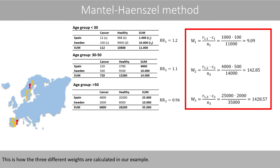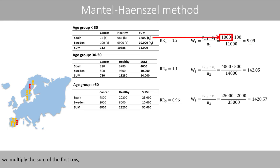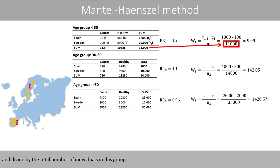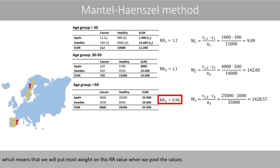This is how the three different weights are calculated in our example. To calculate the weight for the first group — the group with the youngest people — we multiply the sum of the first row by the value in element C and divide by the total number of individuals in that group. Note that the weight of the last group is much higher than the weights of the other two groups, which means we will put the most weight on that relative risk value when pooling.